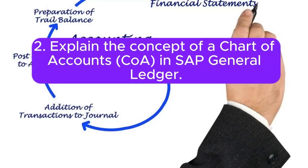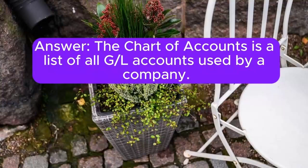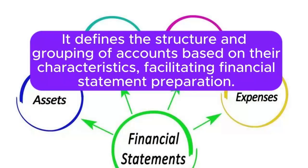Question 2: Explain the concept of a Chart of Accounts (COA) in SAP General Ledger. Answer: The Chart of Accounts is a list of all General Ledger accounts used by a company. It defines the structure and grouping of accounts based on their characteristics, facilitating financial statement preparation.